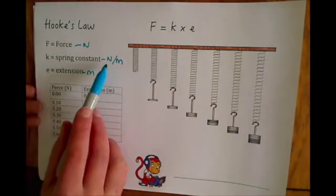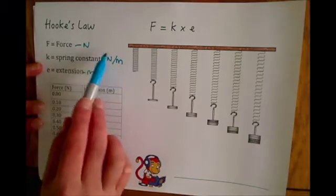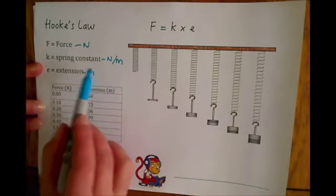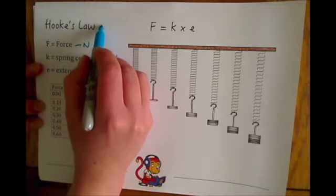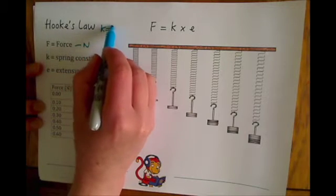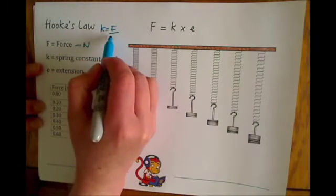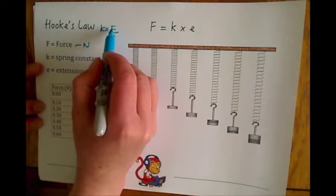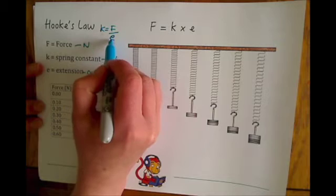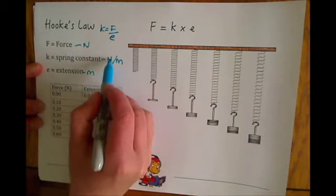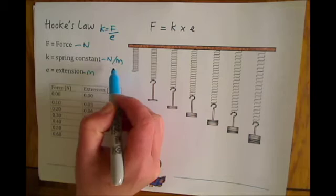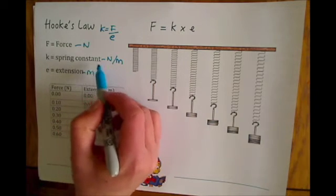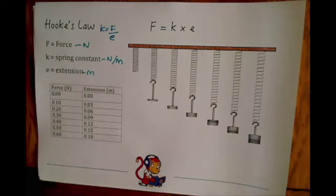If you rearrange the equation, you can see how you get those units for the spring constant. If we rearrange, we get k equals F divided by e — so k equals force in Newtons divided by extension in metres, and therefore you get Newtons divided by metres. So if you can't remember the units for that one, that's quite a neat way of working it out.